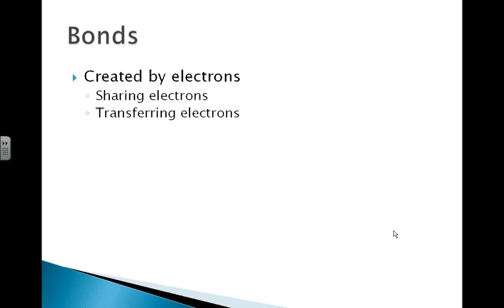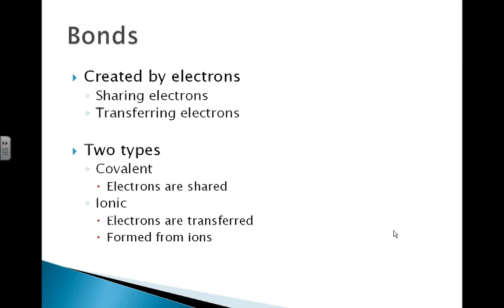When we look at things like bonds, they are created by electrons. It's not just simply a stick that we put in between the two balls. They are created by electrons. And we can have two types of bonding. We can have sharing of electrons, and we can have transferring of electrons. You need to know what those two types of bonds are. There is covalent, where electrons are shared. And there is ionic, where our electrons are transferred. One will transfer electrons to the other. And these are formed from ions.